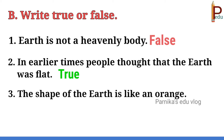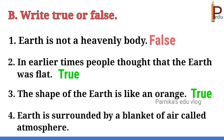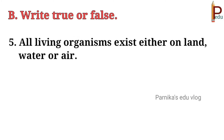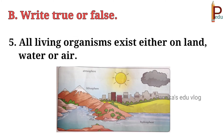Third: the shape of the earth is like an orange. Yes, it is true. Fourth one: earth is surrounded by a blanket of air called atmosphere. Yes, it is true. Fifth: all living organisms exist either on land, water or air. Yes, it is true.